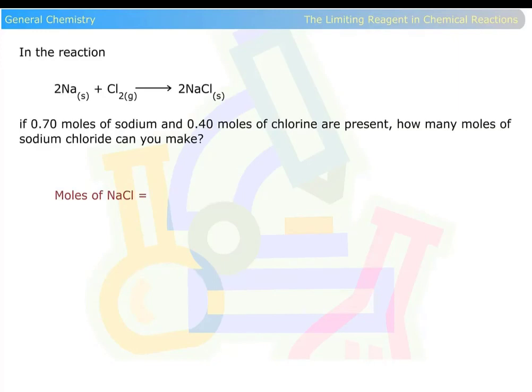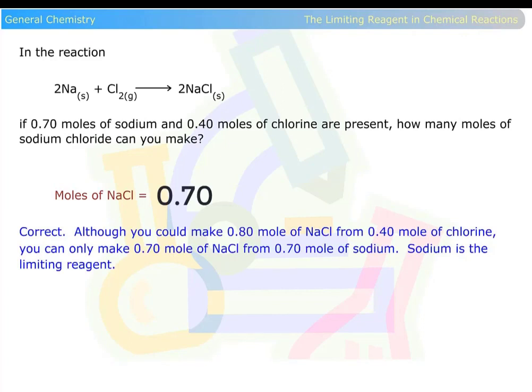In the reaction, sodium plus chlorine is equal to sodium chloride. If 0.7 moles of sodium and 0.4 moles of chlorine are present, how many moles of sodium chloride can you make? The answer is 0.70. Although you can make 0.80 mole of sodium chloride from 0.4 mole of chlorine, you can only make 0.7 mole from 0.7 mole of sodium. Sodium is the limiting reagent.